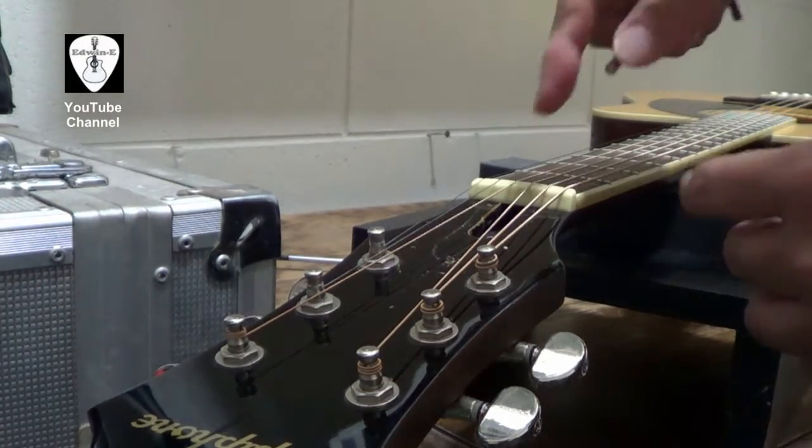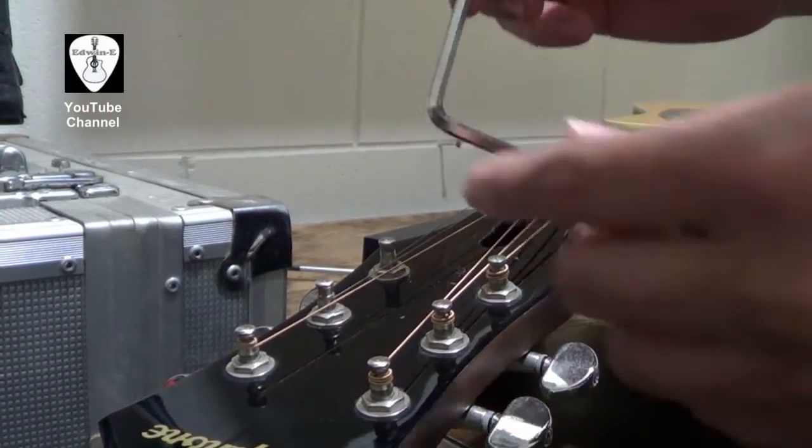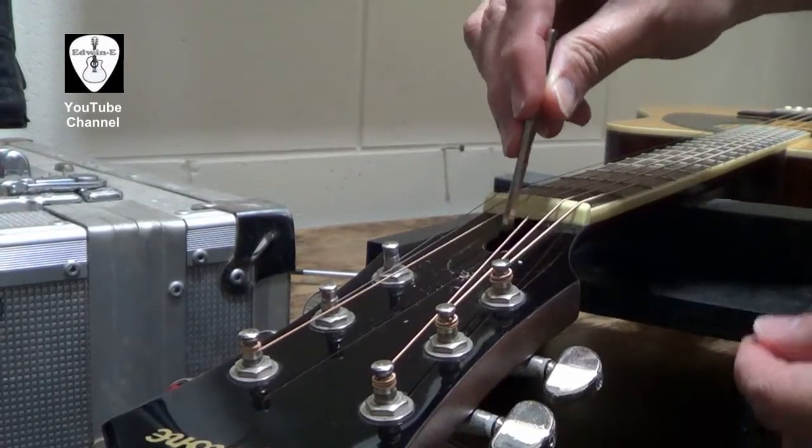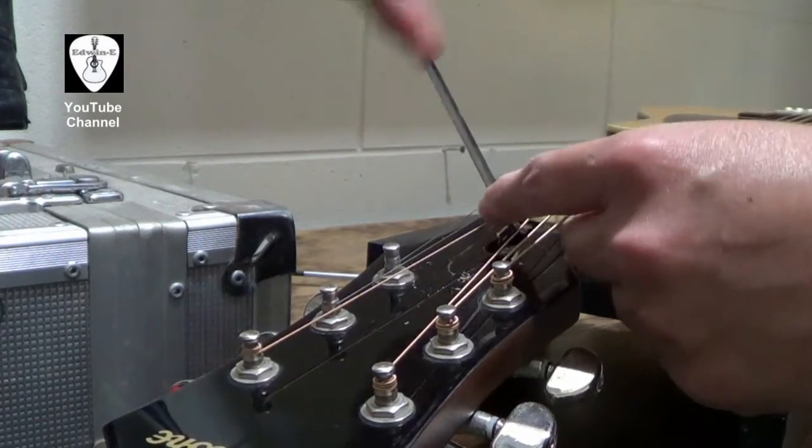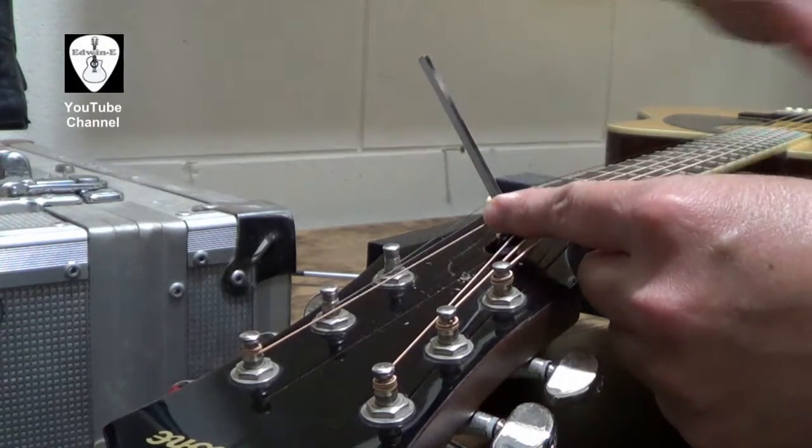Okay, to adjust the truss rod for this model, you need a 4mm Allen key. To make it tighter, you need to turn it clockwise towards you.